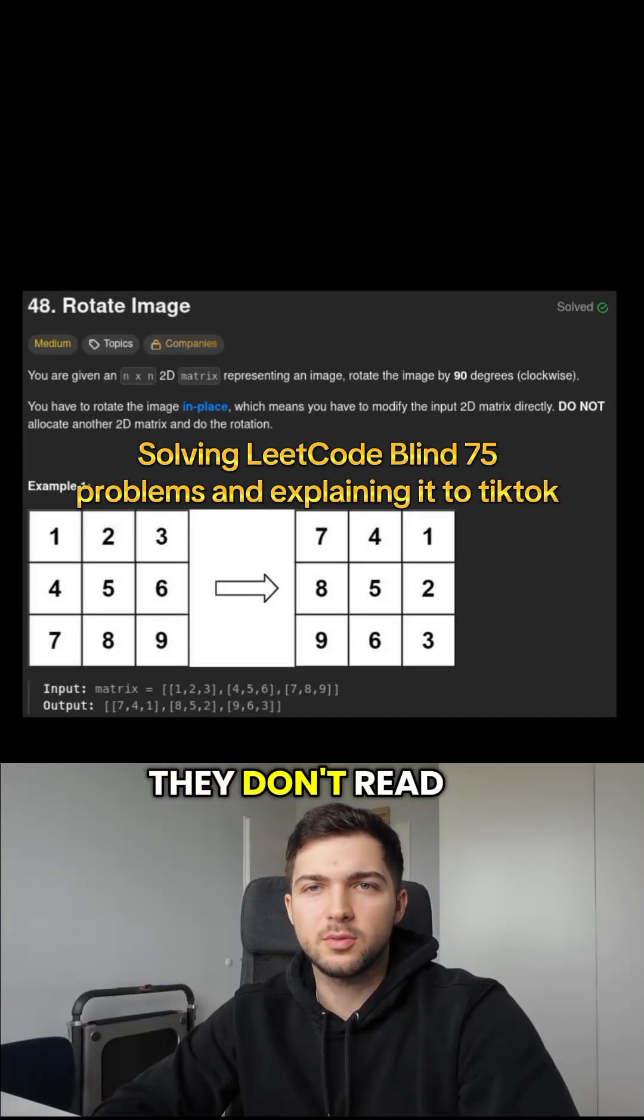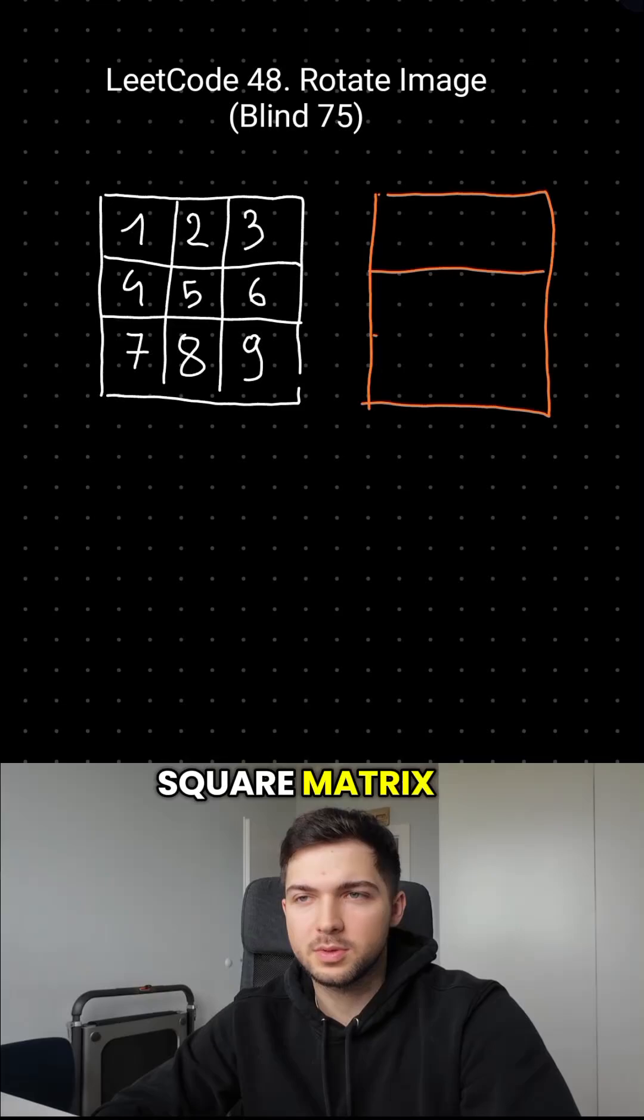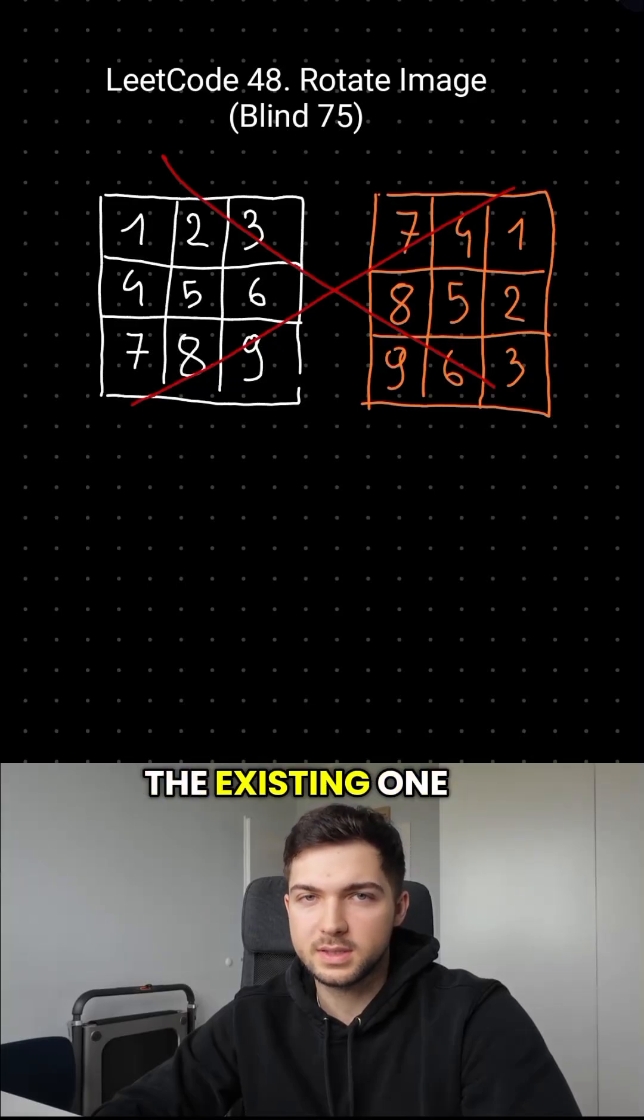Most people fail this task because they don't read the statement carefully. In this task we are asked to rotate a square matrix, but we have to do that in place. That means we can't create a new variable for the result, but rather modify the existing one.